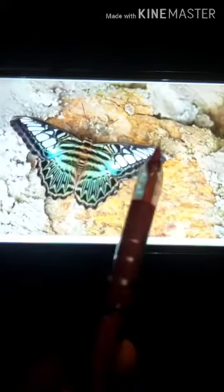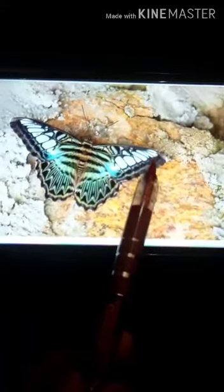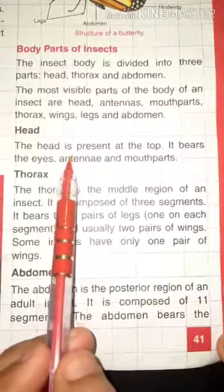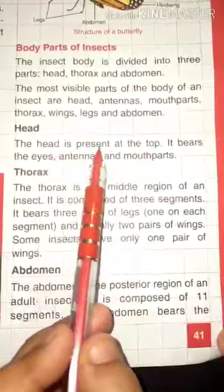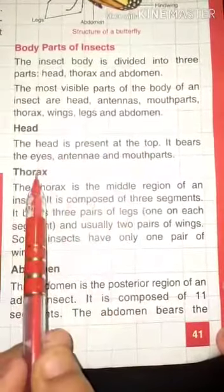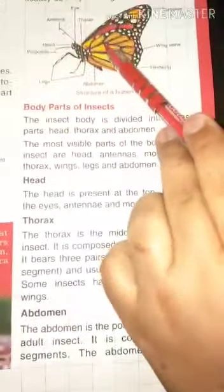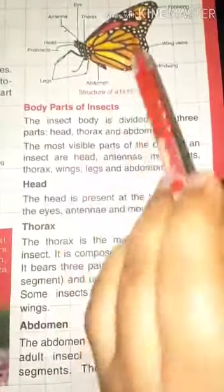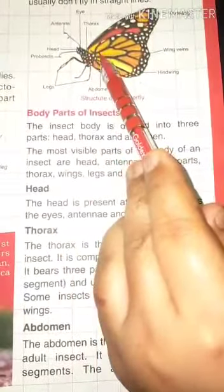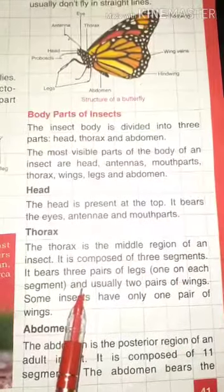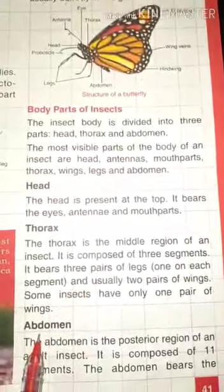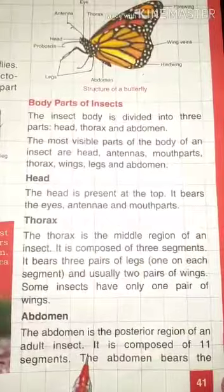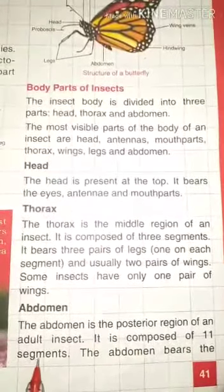Next is the abdomen. The abdomen is the posterior region of an adult insect — that is the bottom part. The head is at the top, the thorax means chest, and the four wings and six legs are attached to the thorax. The abdomen is composed of eleven segments.